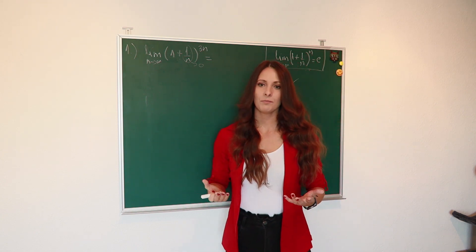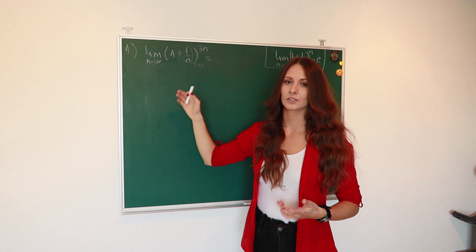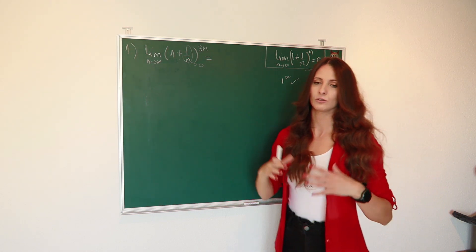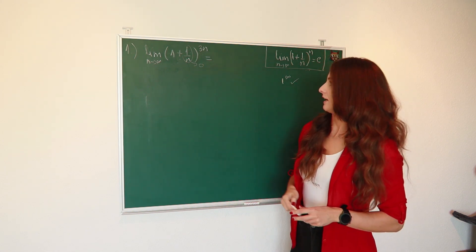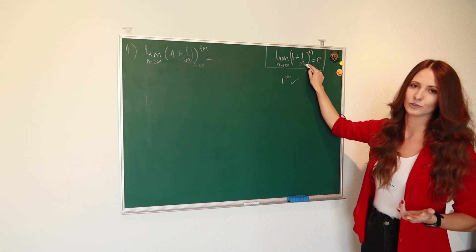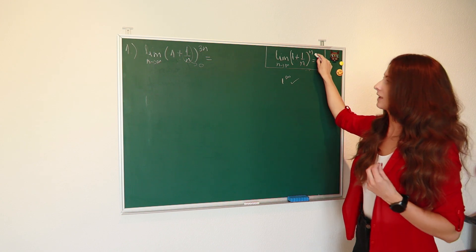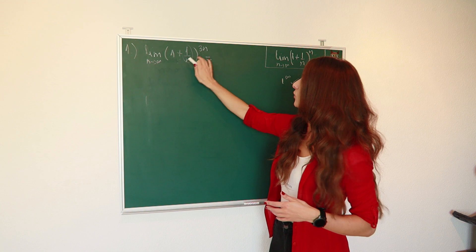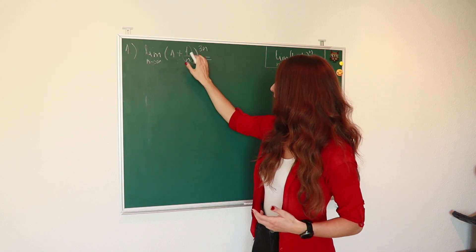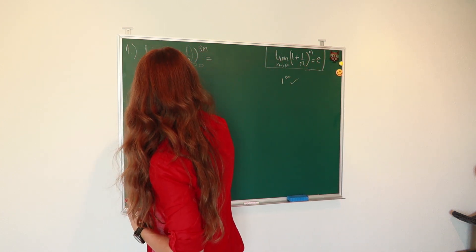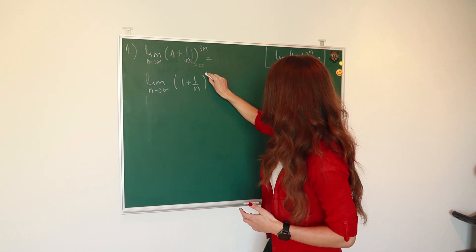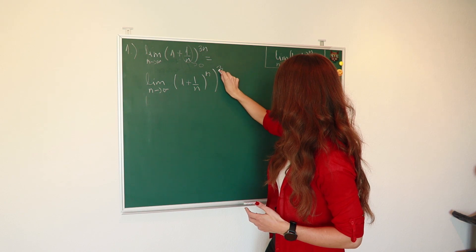That means we can use this definition. The second step is to compare our definition with our example. We have 1 plus 1 over n — the same as in the definition — so we leave it as is. And here we have 3n as the power. According to our definition, if you have n in the denominator, you have to have n as the power. But we have 3n, so we need to rewrite it. We can write: limit when n approaches infinity of 1 plus 1 over n, raised to the power of n, and that altogether raised to the third power. This is valid by the exponent property a^(m·n) = (a^m)^n, so 3 times n equals 3n.